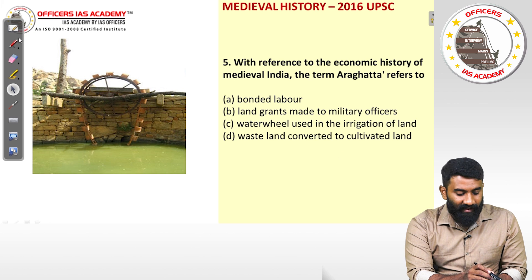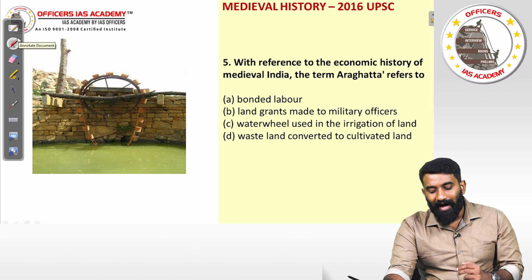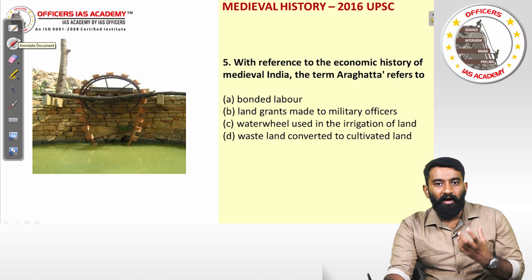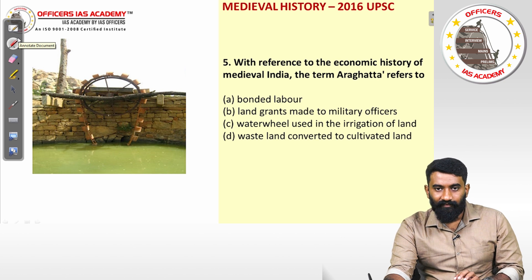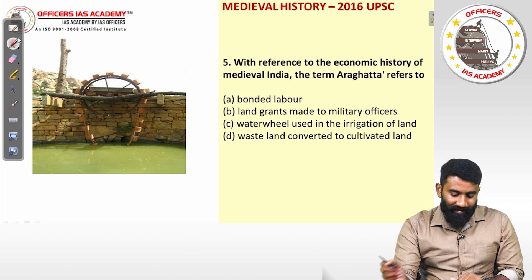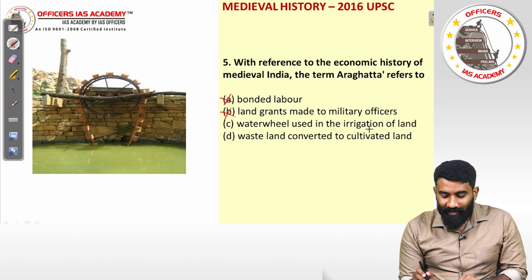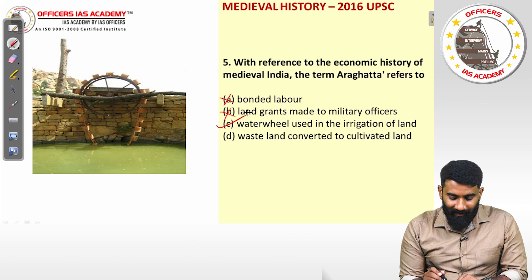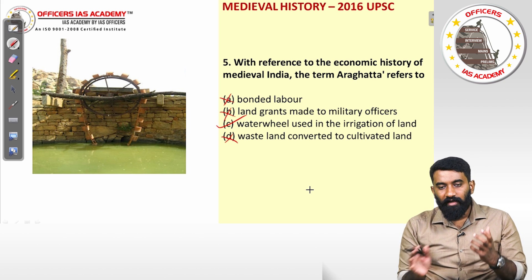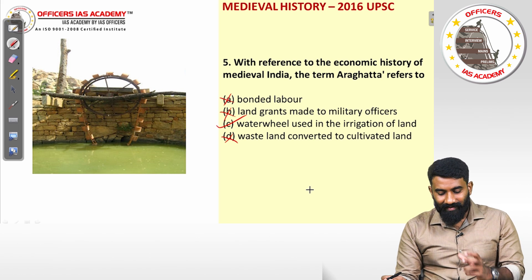Question five: with reference to the economic history of medieval India, the term 'Aragatta' refers to a water wheel used in the irrigation of land. As shown in the image, it is a pot well or pot-turned wheel used for irrigation. It is not bonded labour, not a land grant, and not wasteland converted to cultivated land. The answer is a water wheel used for irrigation.